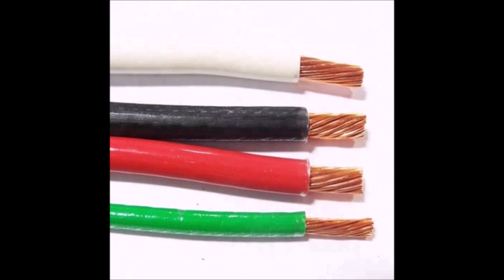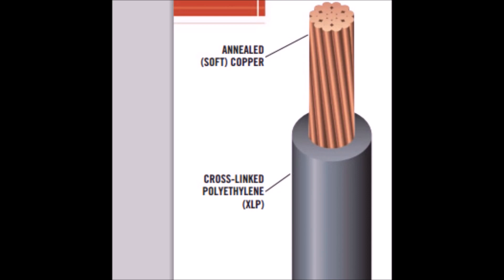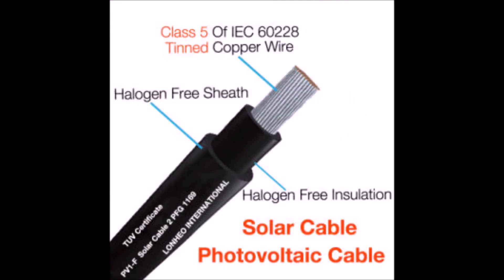For wire exposed to the elements, such as underneath your solar panels, you can choose USE2 or RHW2 cables, but there's also a specific rating for solar, called PV wire, that's the best for your system. This is especially true for off-grid systems, as PV wire is the best for ungrounded systems.